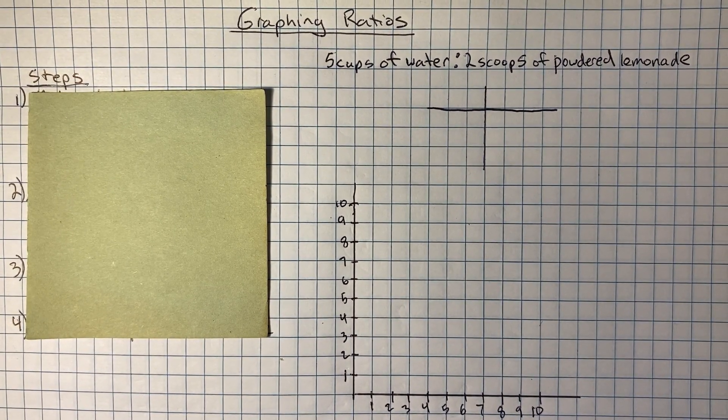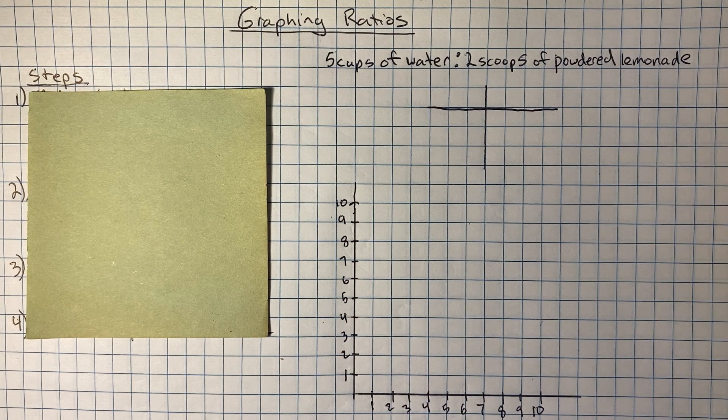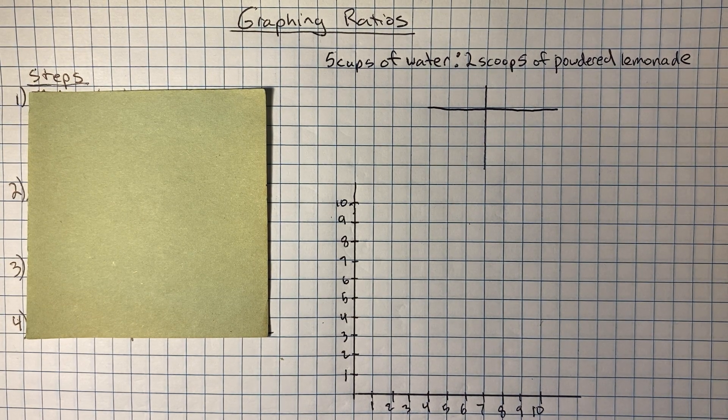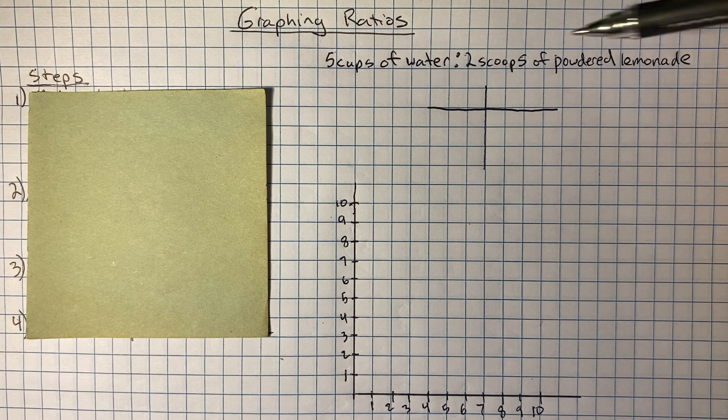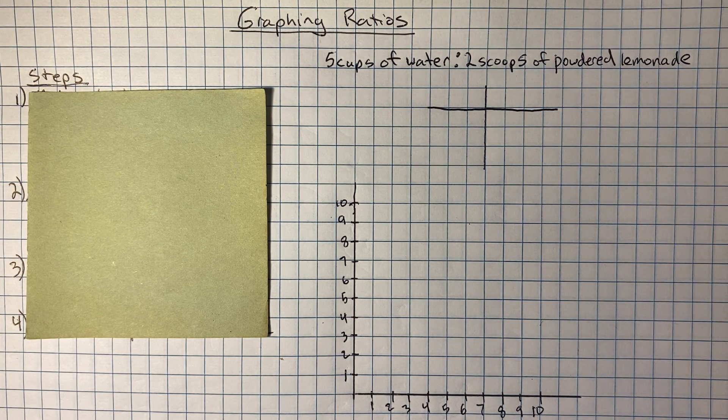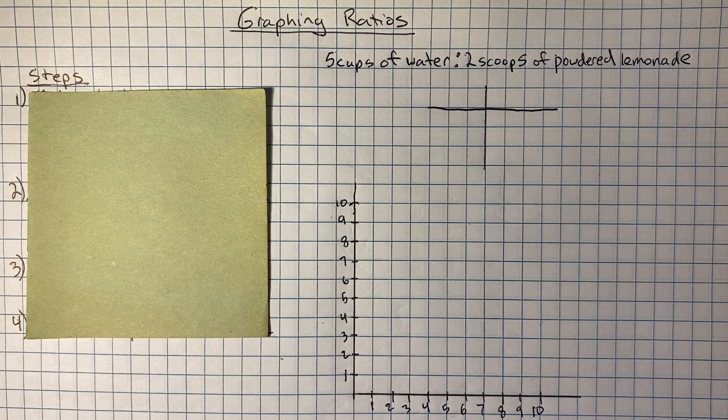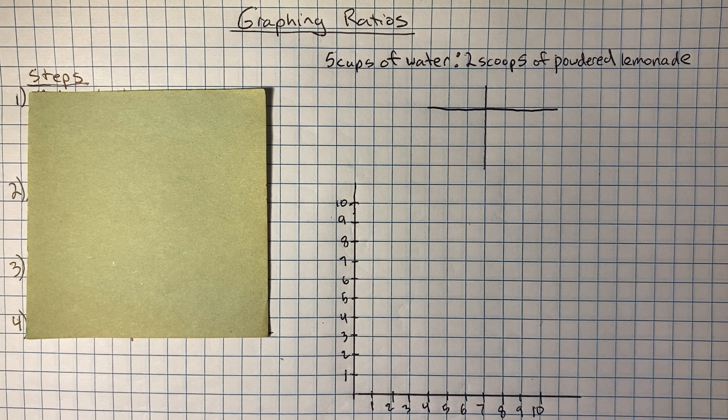Okay, so I'm going to talk a little bit about graphing and ratios. Again, ratios are a comparison of two things. So for instance, you could say every five cups of water is two scoops of powdered lemonade. And so we're going to look at how can you turn that into a graph, and then why might you use a graph of a ratio.